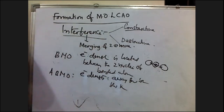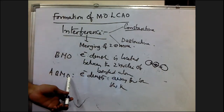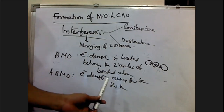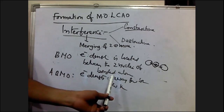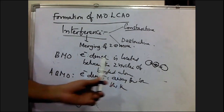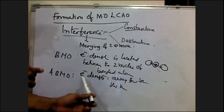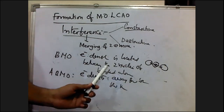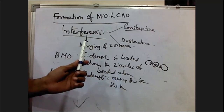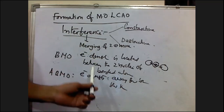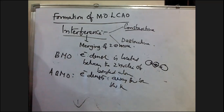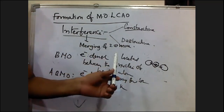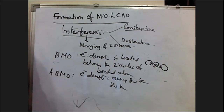In the case of an anti-bonding molecular orbital, the electron density is located away from the space between the nuclei, causing the two nuclei to repel each other. Therefore, electrons placed in an anti-bonding molecular orbital destabilize the molecule. The net repulsion of the electrons is more than the attraction between electrons and nuclei, which causes a net increase in energy. That is why the anti-bonding molecular orbital has higher energy than the corresponding atomic orbitals.